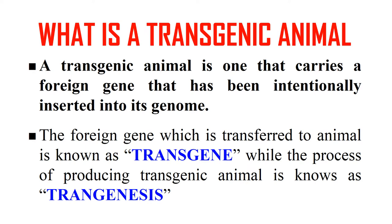First of all, we should know what transgenic animals are. A transgenic animal is an animal which carries a foreign gene, or in which a foreign gene has been intentionally inserted into its genome. That animal is known as a transgenic animal. The foreign gene which is transferred to the animal is known as a transgene, and the complete process of producing a transgenic animal is known as transgenesis.